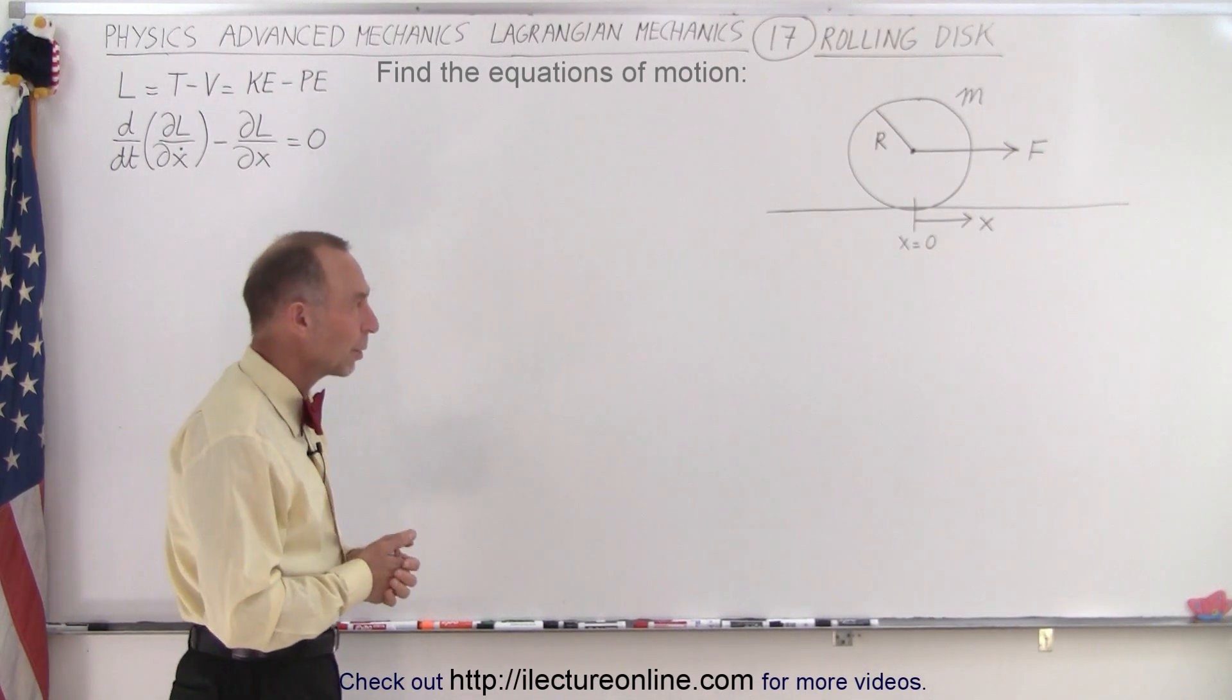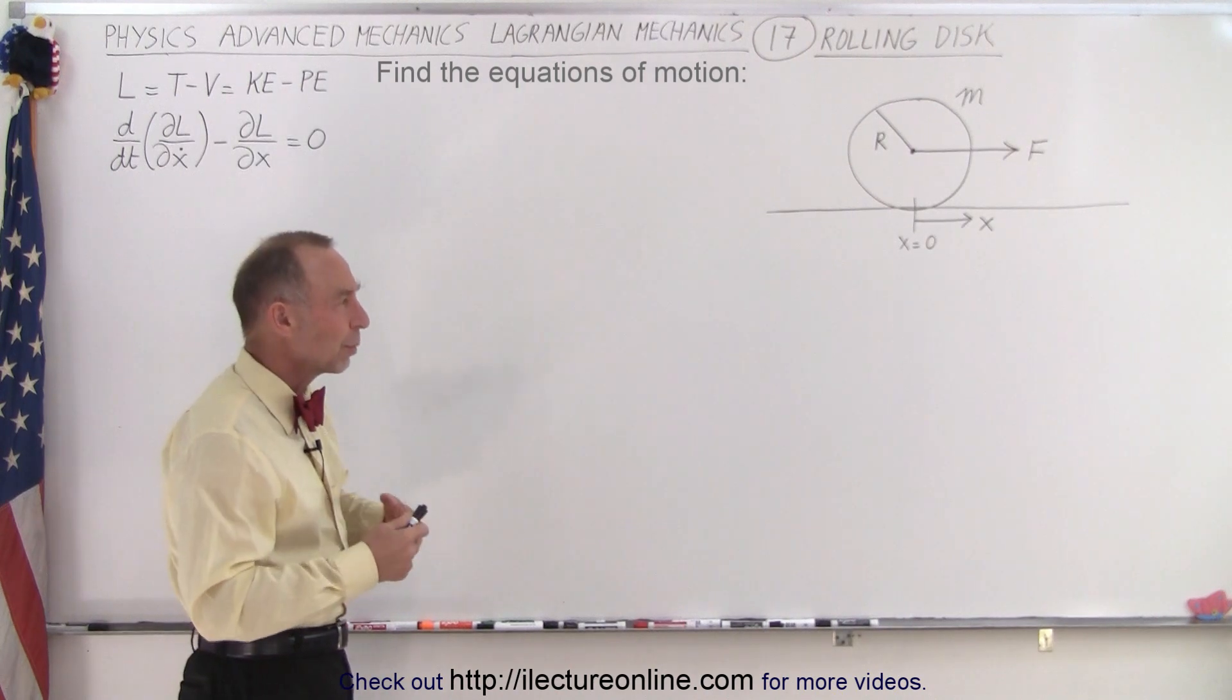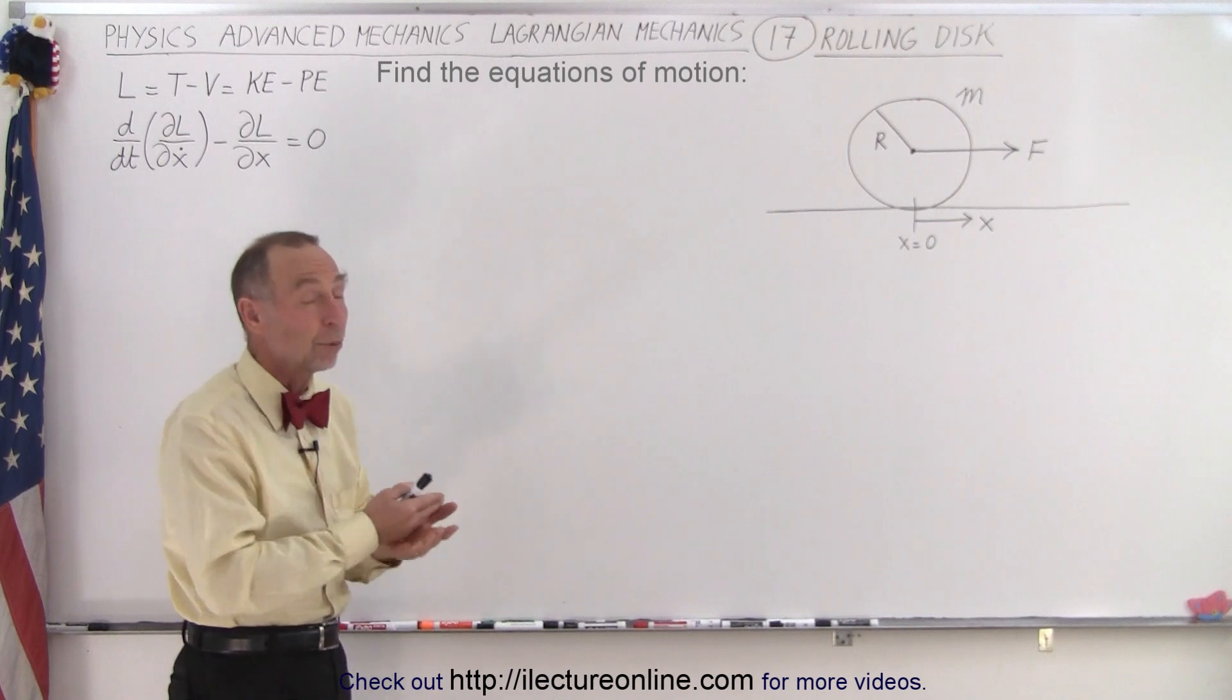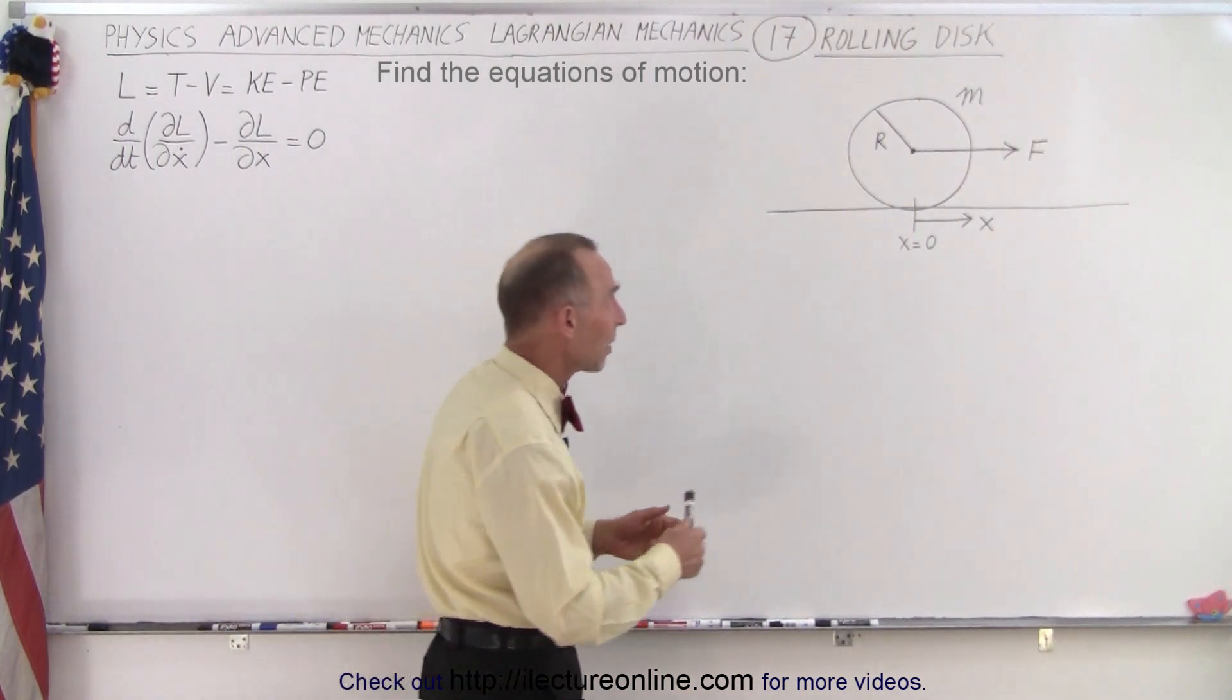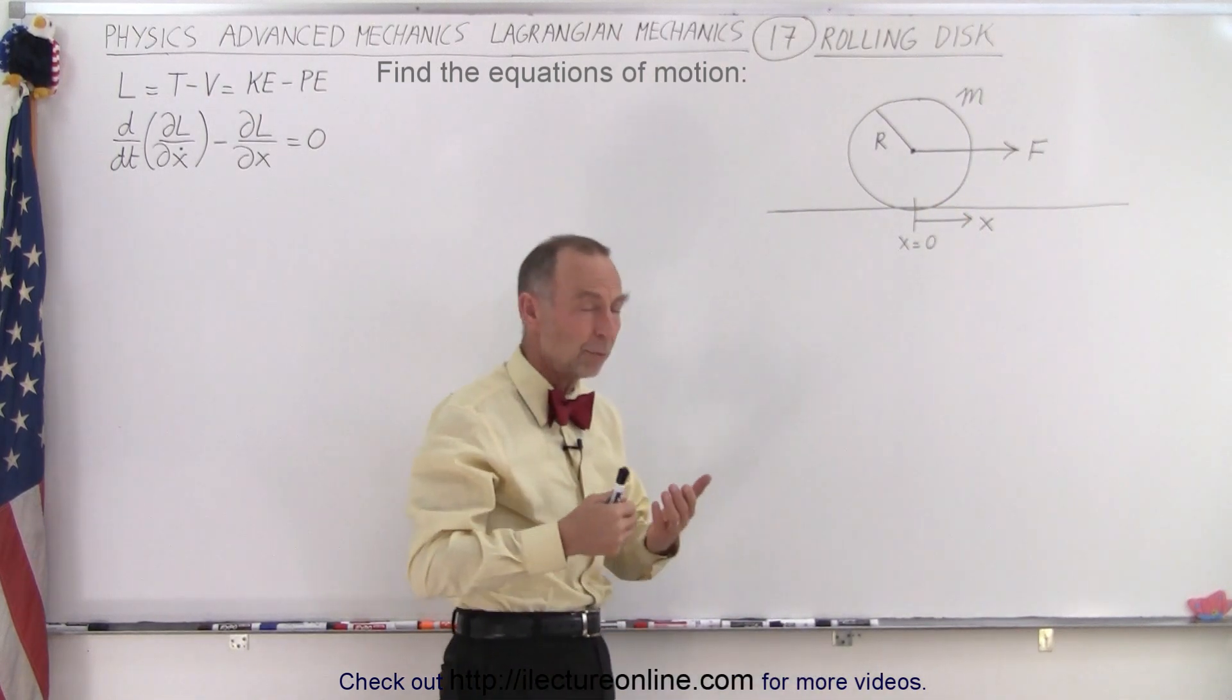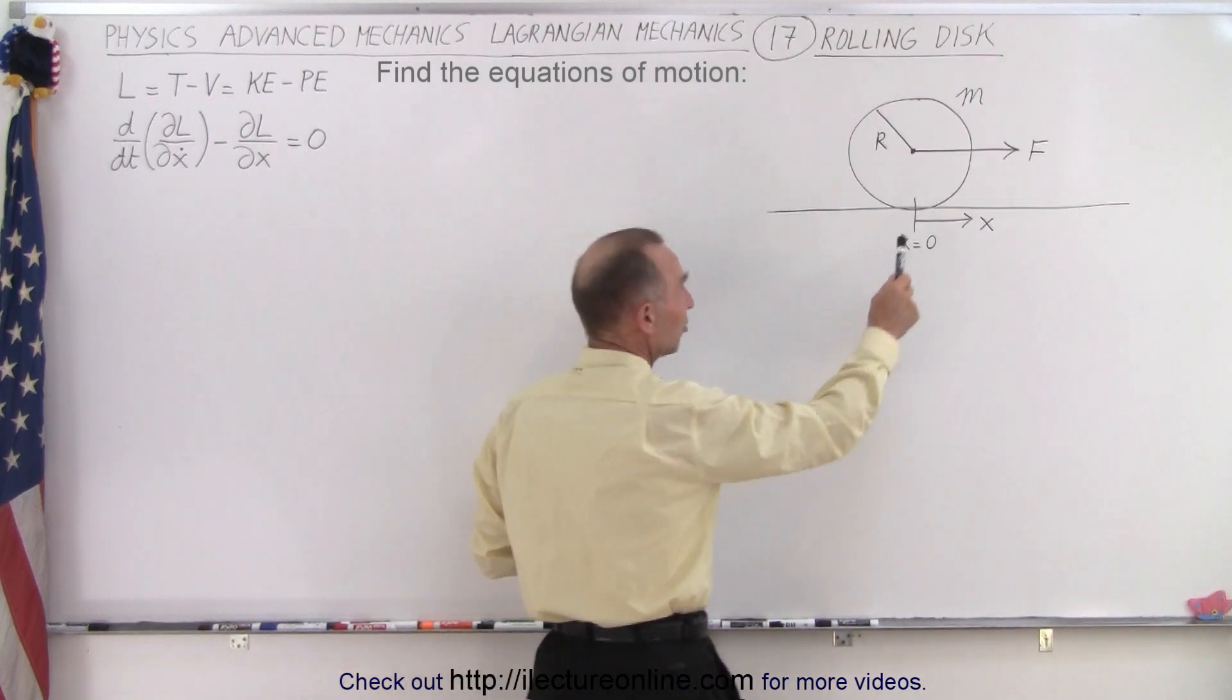We typically use what we call not necessarily x, y, and z variables, but we use variables that represent distance, but we don't always use x, y, and z. So what we have here next is a rolling disc. The rolling disc has a certain amount of moment of inertia, and therefore we'll have two different kinds of kinetic energy.